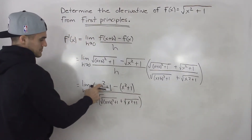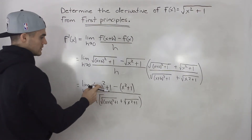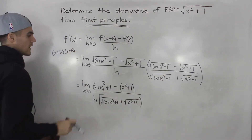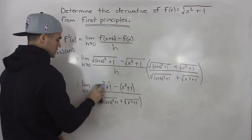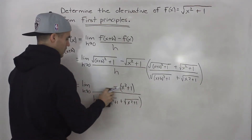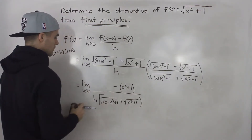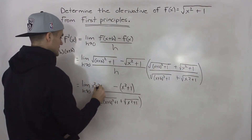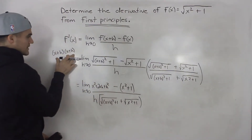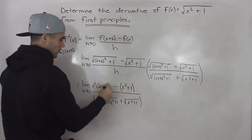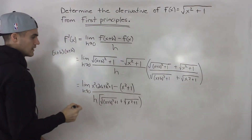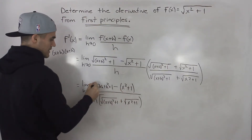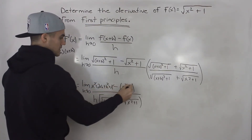Notice we can expand x plus h squared — that's x plus h times x plus h — so we FOIL all of that out. When we do that, we end up with x squared plus two x h plus h squared plus one. Then when we distribute the negative inside the bracket, the x squared terms cancel out and the ones cancel out as well.